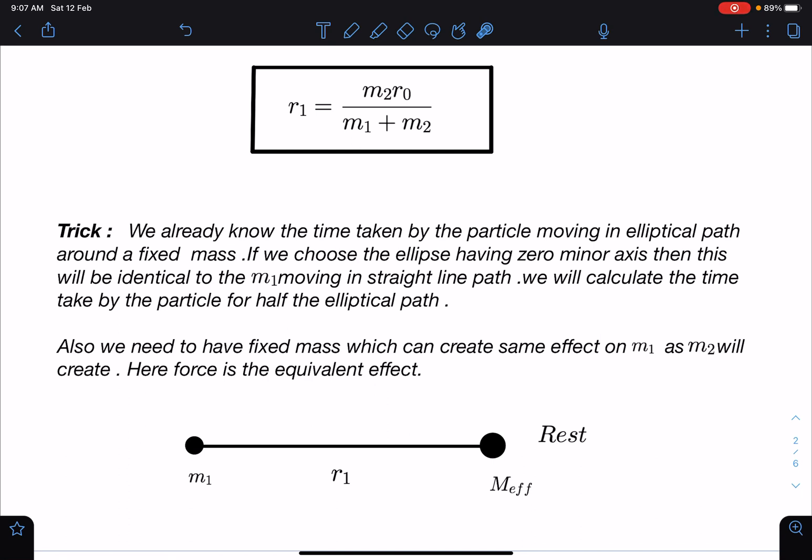Now let's imagine a situation where particle is moving in elliptical path and that elliptical path is having zero minor axis. So in that case it will be like it is moving along the major axis only. And here it is, then this will be identical to m1 moving in a straight line path.